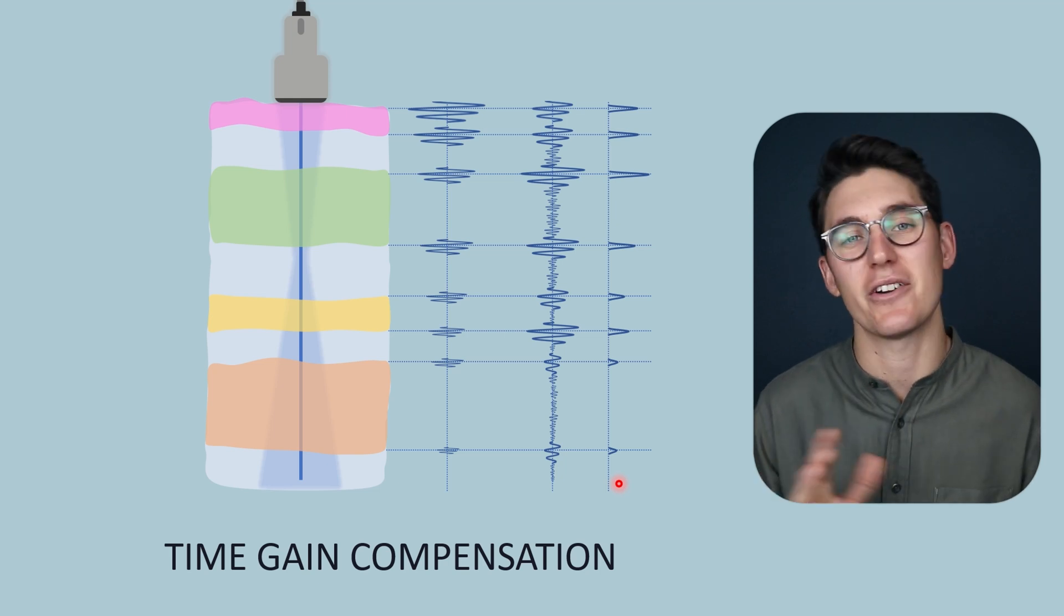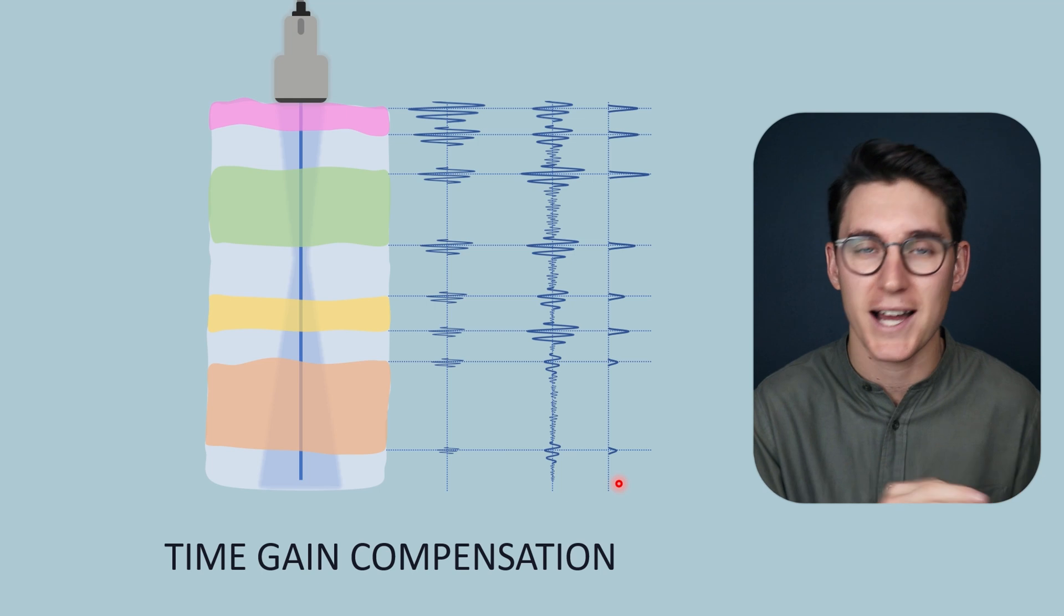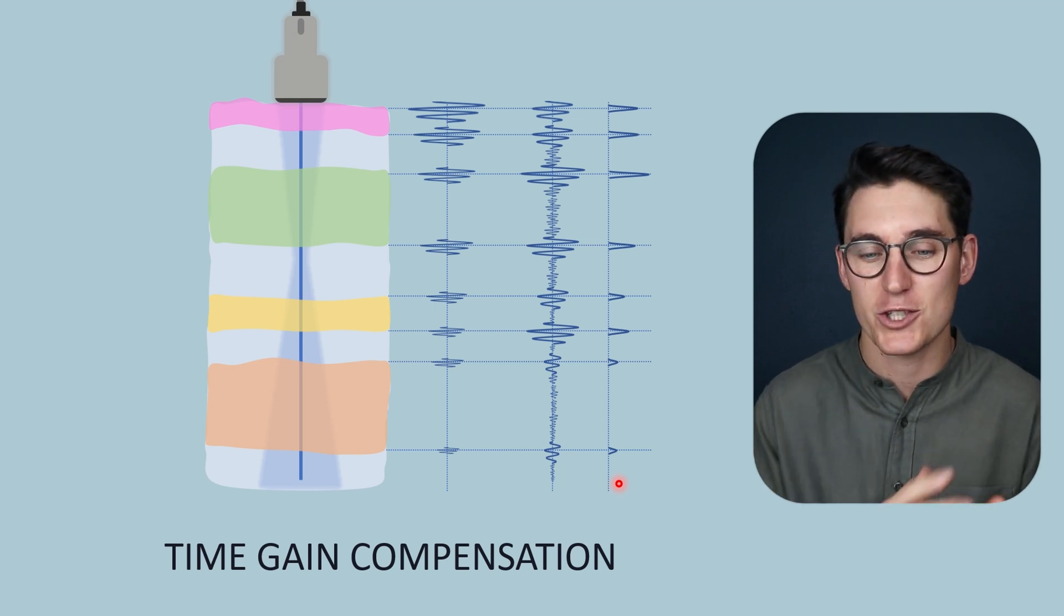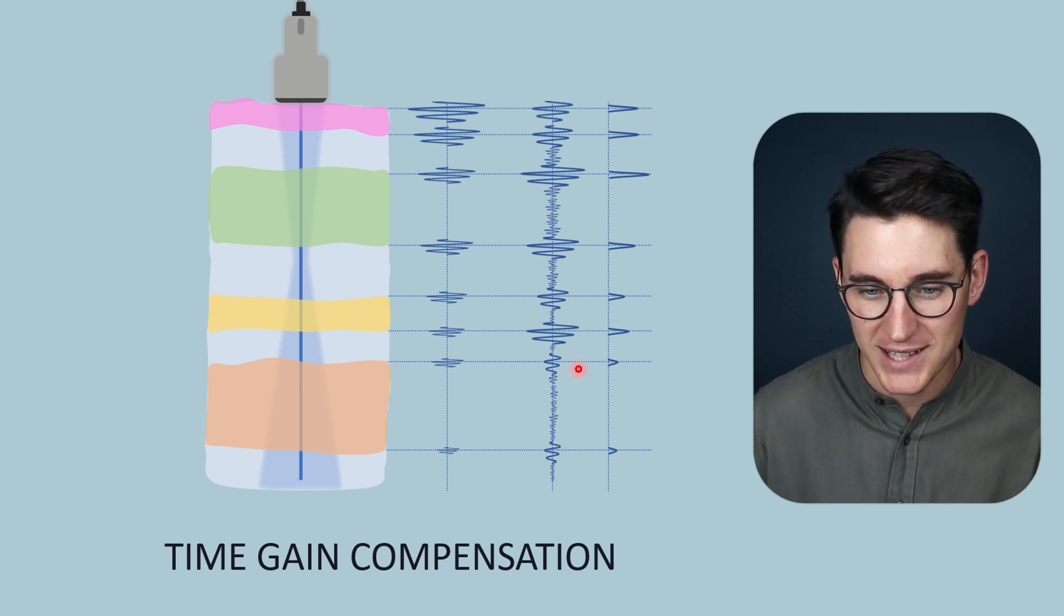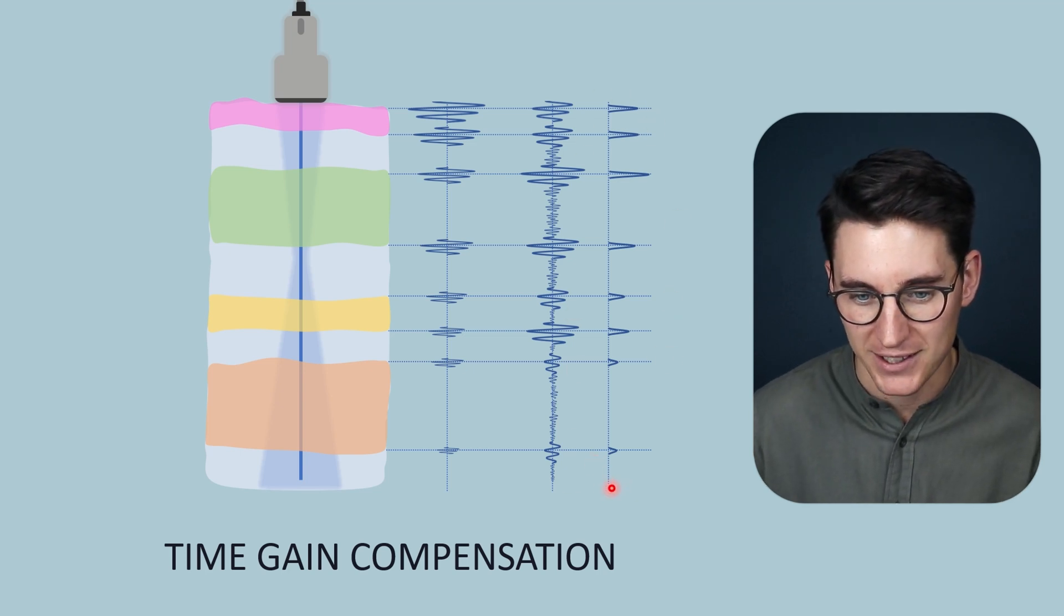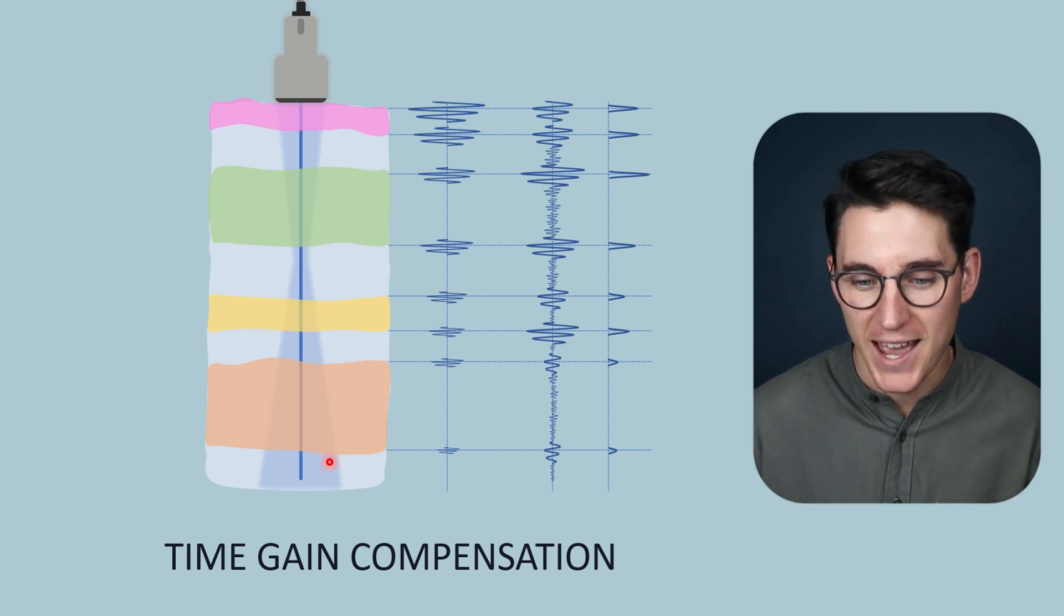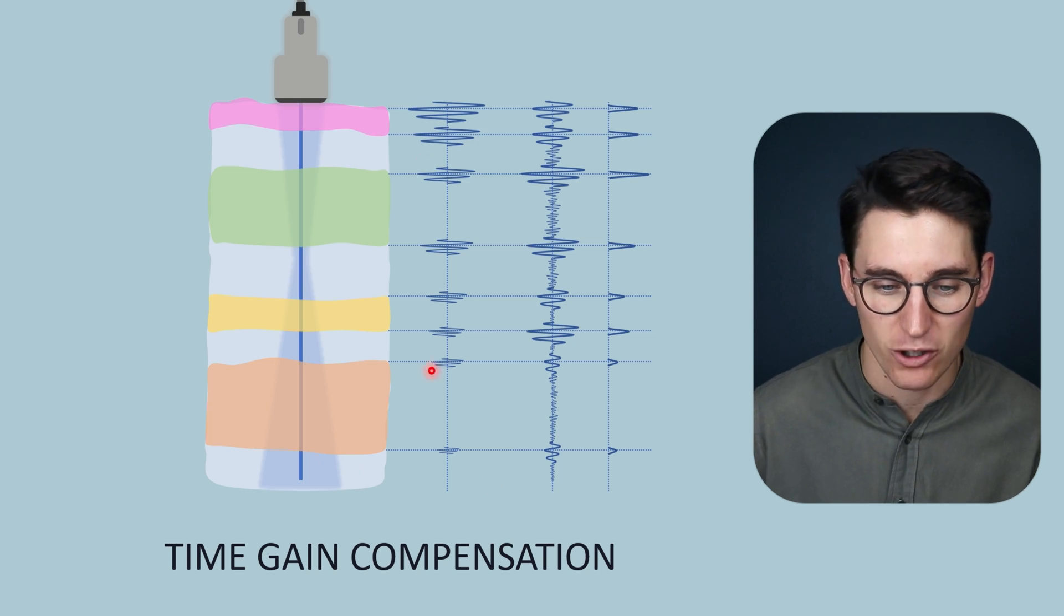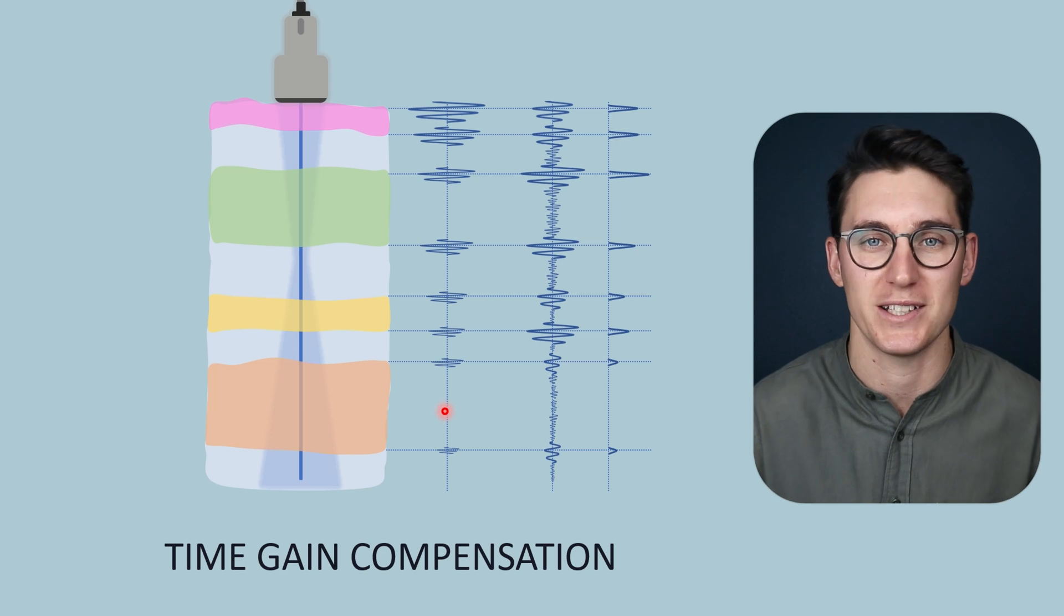Now you may have heard of this in various different forms. Often people call it depth gain compensation or time varied gain. You may have also heard of swept gain. These are all synonyms. They all mean the same thing. So how do we go about ensuring that this A-mode signal that we get back truly reflects the differences in acoustic impedances at tissue boundaries and doesn't integrate the loss of intensity as the incident ultrasound beam travels through tissue?